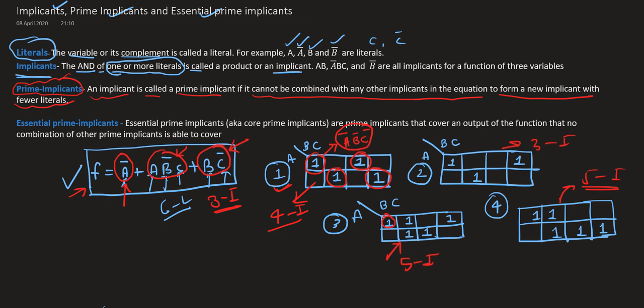Just look at the first example — how many prime implicants are there? This is an implicant. Now I am questioning whether this is a prime implicant. Can I combine this implicant with any other implicant? No, I cannot combine it with any other implicant. So this would be my prime implicant. Similarly, this would also be a prime implicant, and this would be PI, and this would be PI. So here I get four prime implicants.